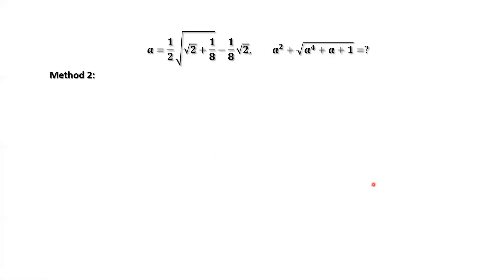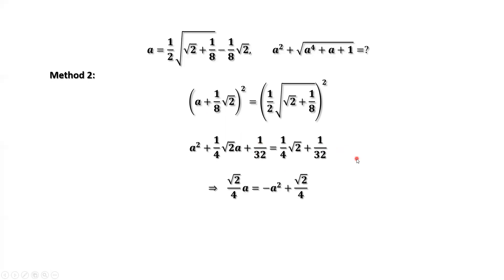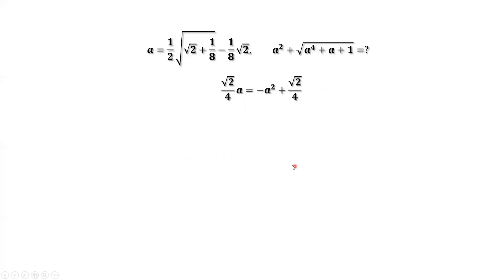Method 2. Similarly to method one, we square both sides and obtain a similar result. One over thirty-two can be cancelled from both sides. Move negative a to the right-hand side, and move positive a squared to the right-hand side. Then multiply both sides by two square root of two to eliminate the constants in front of a.